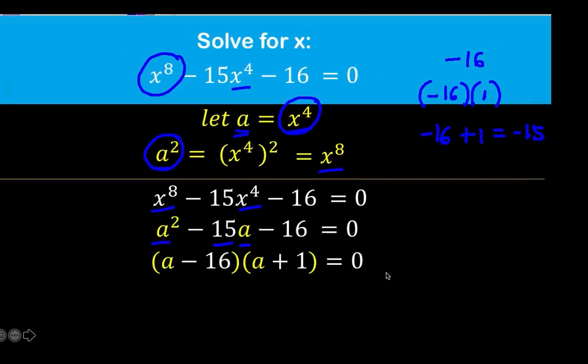We can now write therefore the left side as the quantity a minus 16 times the quantity a plus 1 equals 0. And so solving now for a, when the product of two factors is equal to 0, it implies that one of them must be 0. So we can have a minus 16 equals 0, or the 2nd factor a plus 1 equals 0. And solving now for a, at the left side, a is equal to positive 16, and at the right side, a is equal to negative 1.